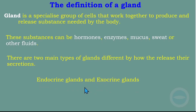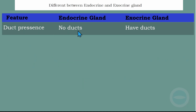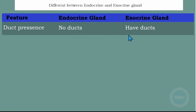We need to know the difference between exocrine and endocrine glands — this is part of the examination guideline. Looking at the following table, one feature is duct present. In endocrine glands, no duct is required. But in exocrine glands, a duct is required. This is the difference between them in terms of duct presence.